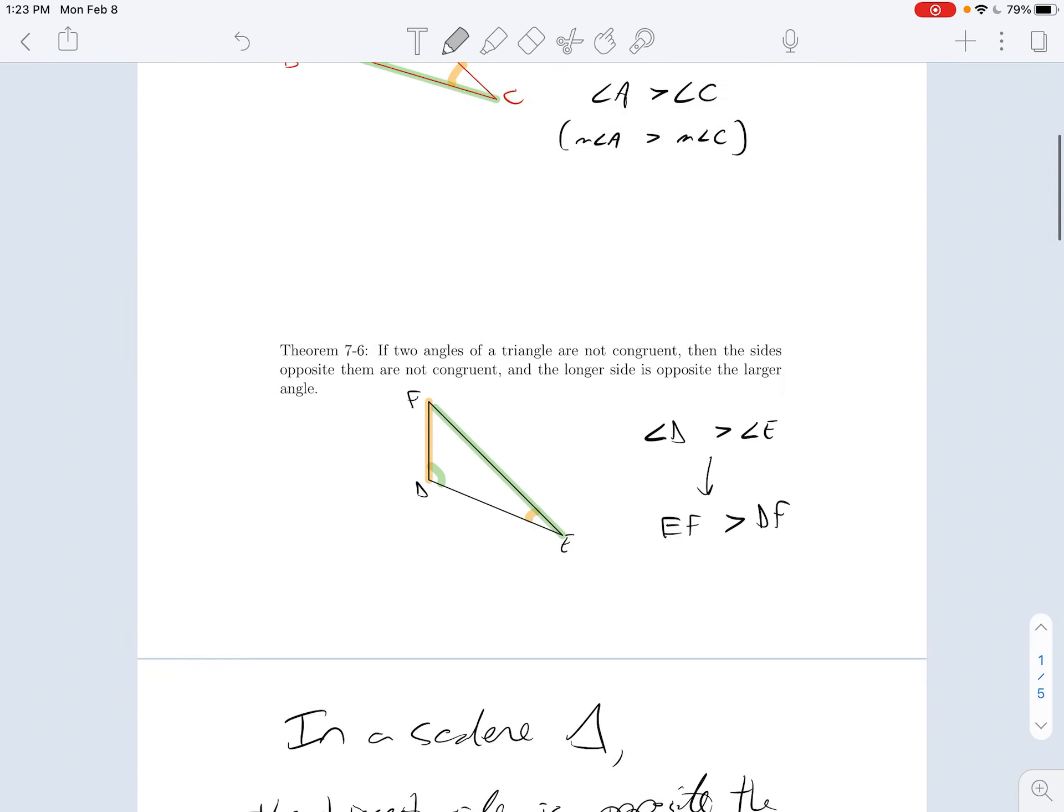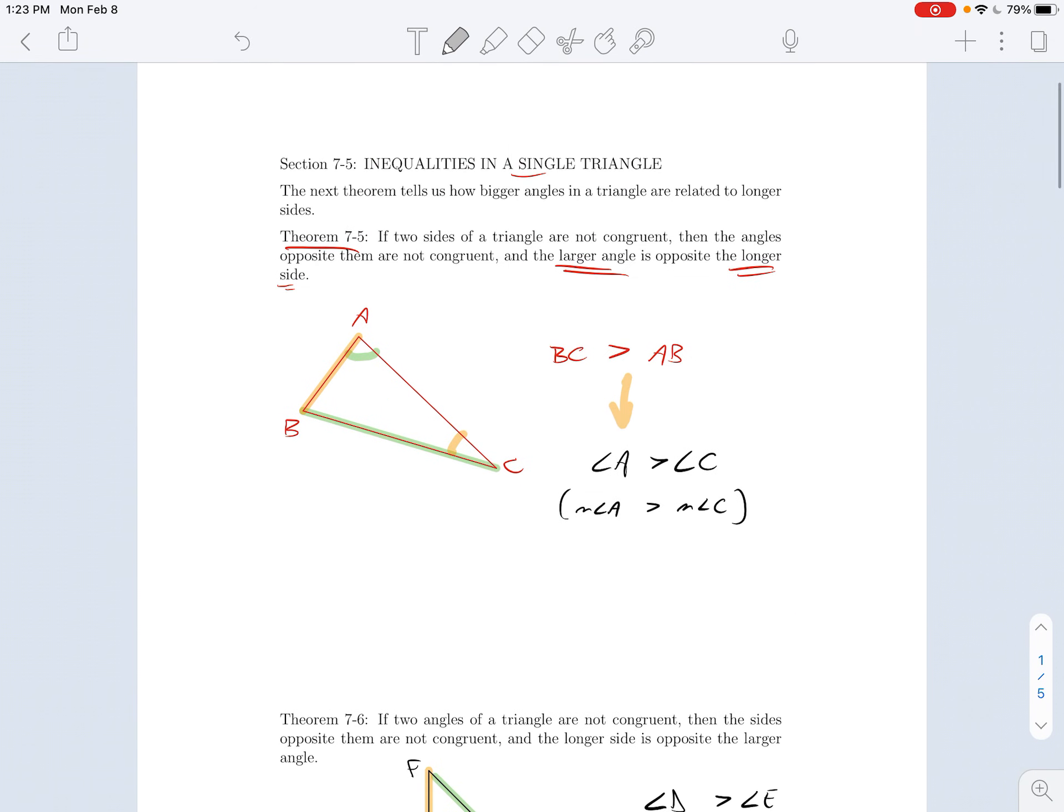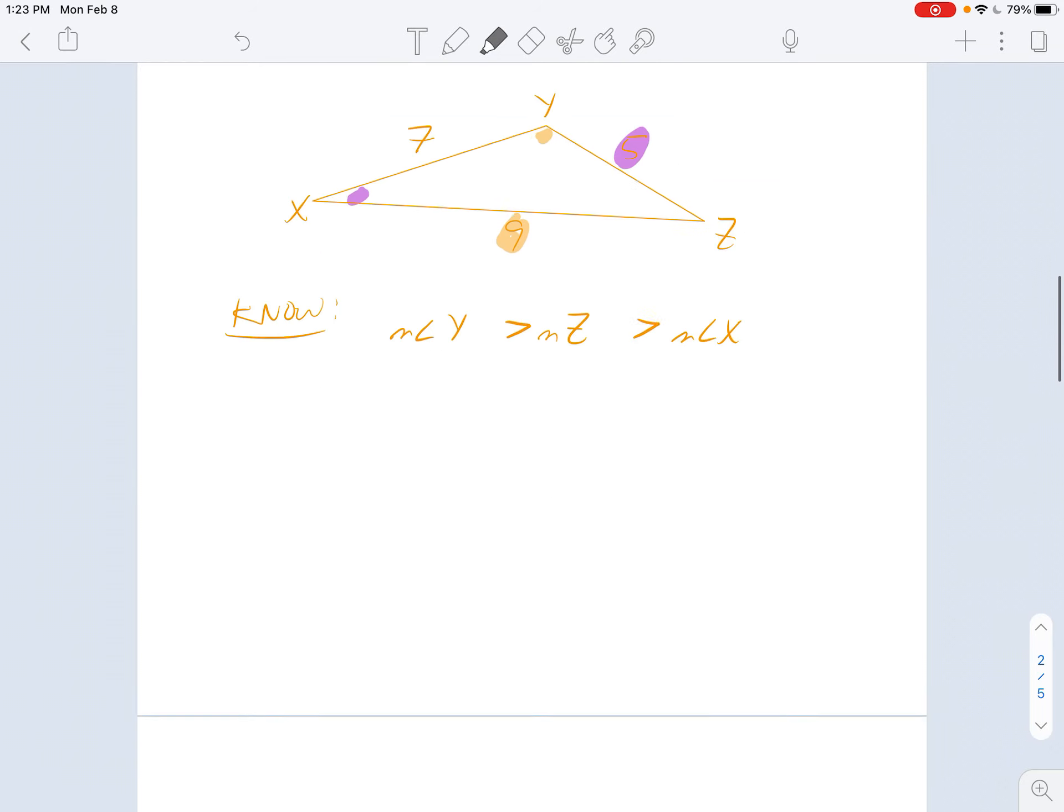Now what I want to be clear on here is that these relationships are true only in a single triangle. A mistake some people make is when they try to jump from one triangle to another.